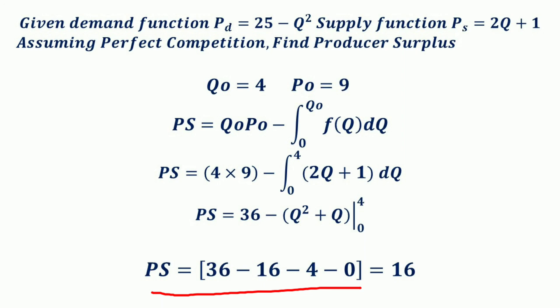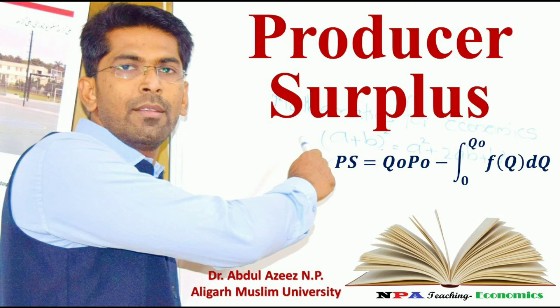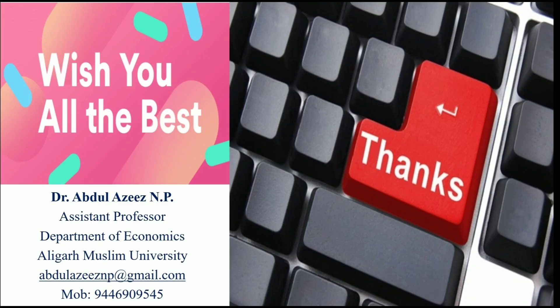Therefore, the producer surplus in this case is equal to 16. I hope you are clear about the concept of producer surplus and how it is calculated. Have a nice day and see you in the next video. Thank you.